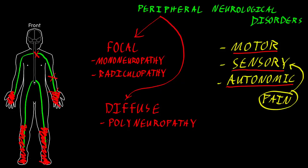We get a very different pattern with diffuse dysfunction of skeletal muscle, which we call myopathy. The word myo refers to muscle, so a myopathy is diffuse dysfunction of skeletal muscle. When skeletal muscle is affected, we don't see autonomic or sensory abnormalities, but we do see the motor abnormality of weakness. Because if skeletal muscle is not functioning properly, you don't have full strength.